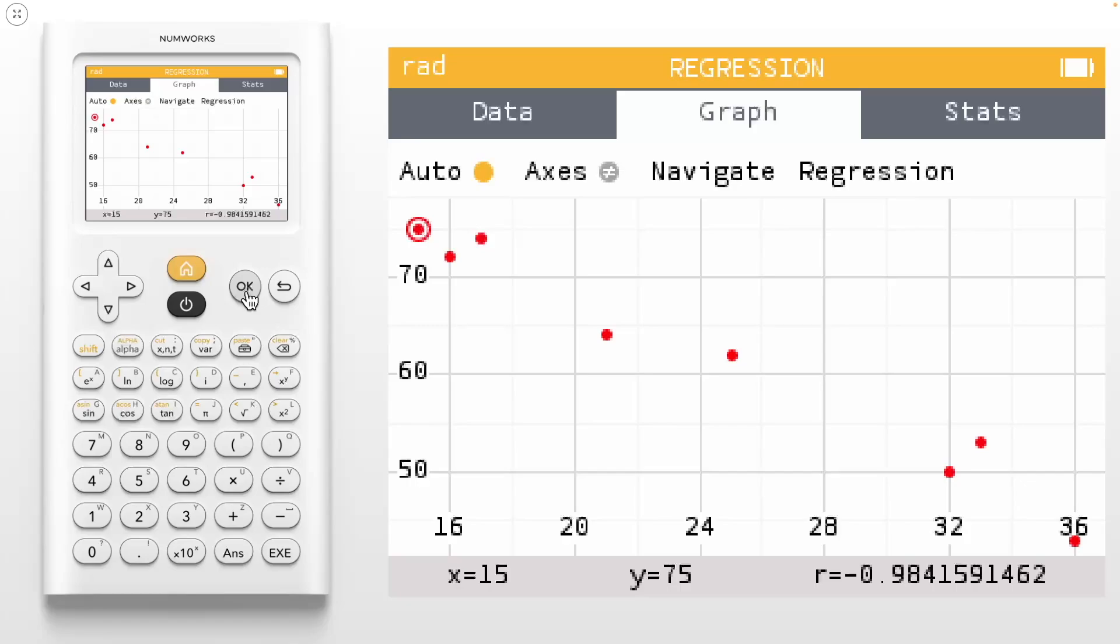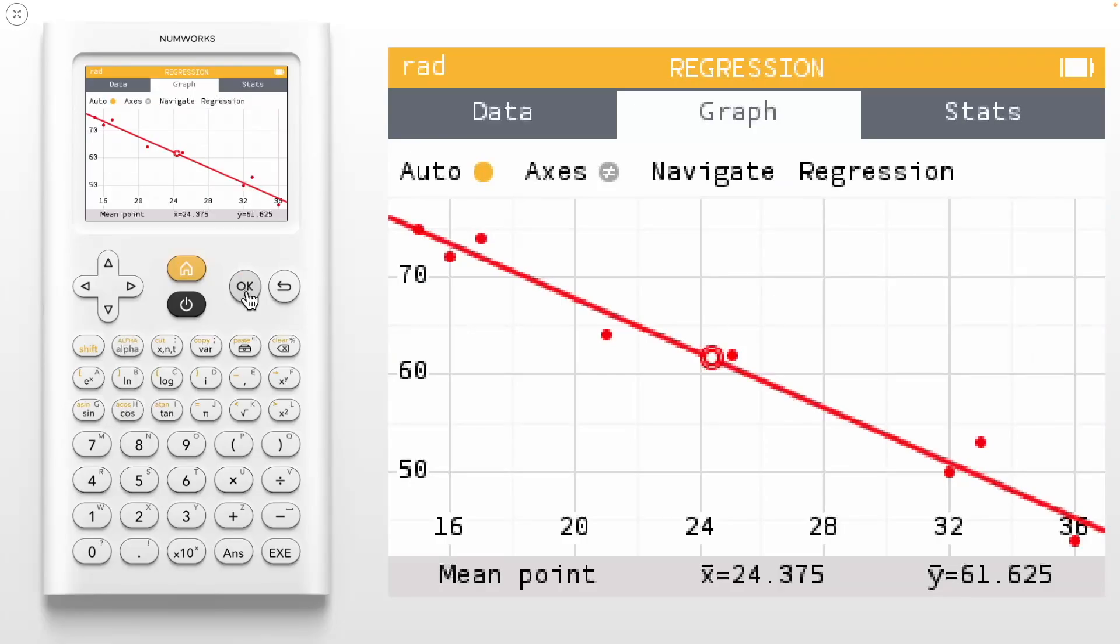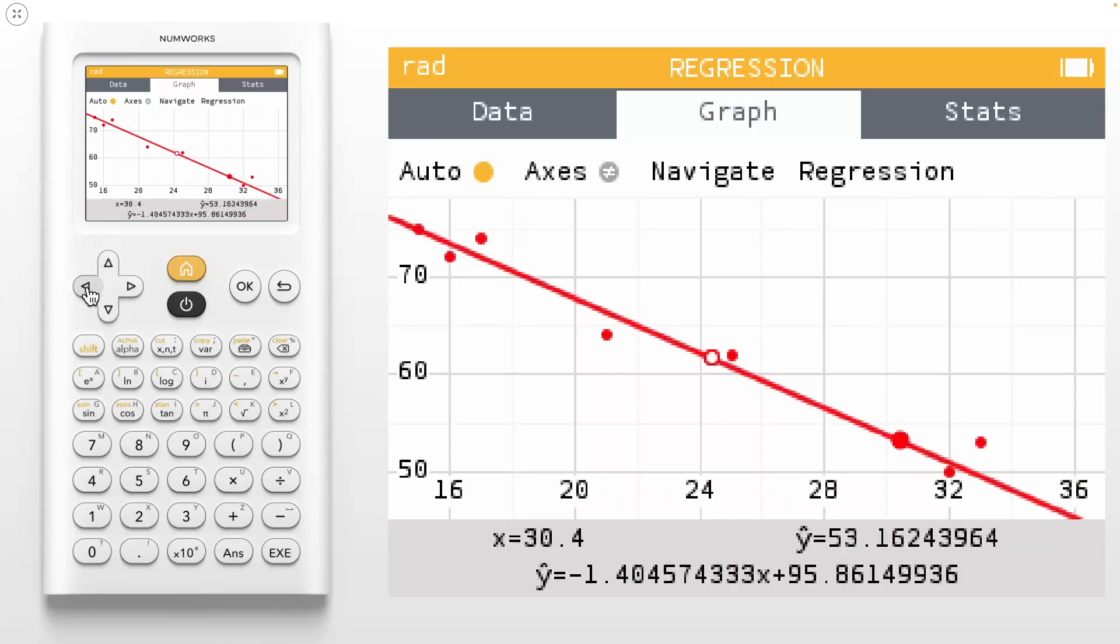Right now, we just have a scatter plot, but let's say we wanted to add a regression line onto our scatter plot. We can use the ok button, or we could scroll up to regression so that we could turn on a regression model that we like. For instance, let's turn on a linear regression in the form y equals mx plus b. Using the navigation keys, you can move to each data point. If you hit the up and down arrow keys, you can move to the regression model and see the predicted output. Our predicted y value at x equals 21 would be y hat equals 66.37. You will also notice the equation for the linear model is given.